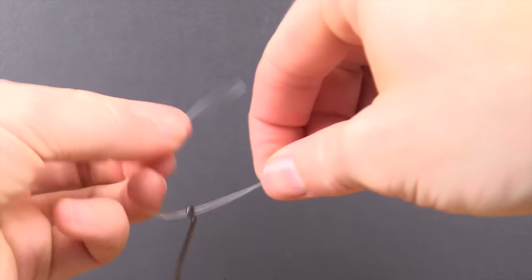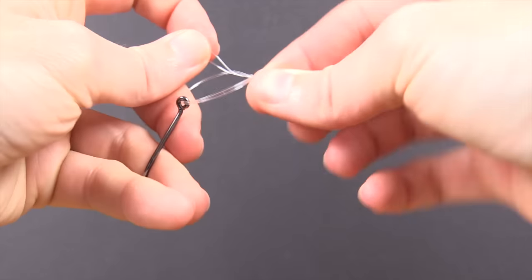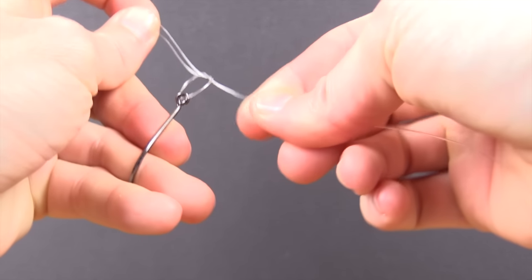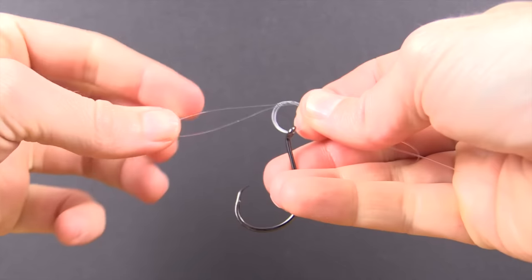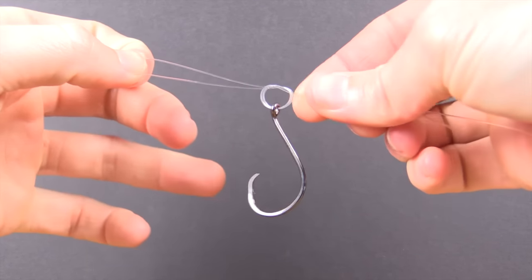The next step is to do a simple overhand knot, just the basic knot of all knots. I typically try to get a decent amount of tag end over here to the left. You'll see why that is needed in a second.